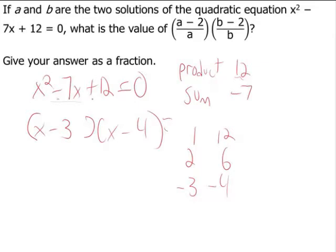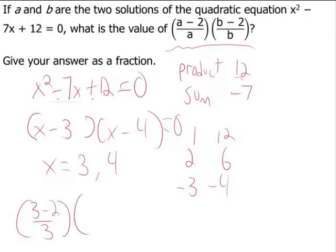And as we can see, we're writing the equation, we have x equals 3 and 4. So let's think we need to do or plug these values into here. So it doesn't matter which way you plug them in. So we get 3 minus 2 over 3 times 4, 4 minus 2 over 4, which gets us 1 third times 2 fourths. So the answer is 2 twelfths, or 1 sixth.